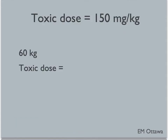The toxic dose for acetaminophen is 150 milligrams per kilogram. So let's say the patient is 60 kilos. The toxic dose would be 150 times 60, which gives us 9,000 milligrams, equal to 9 grams.